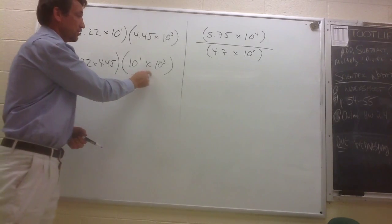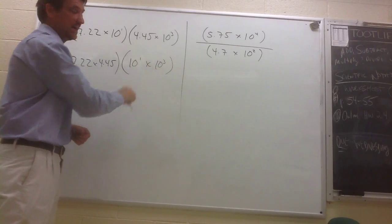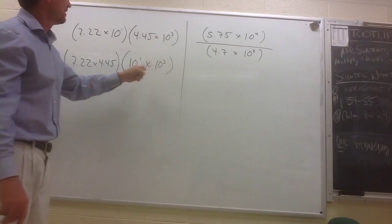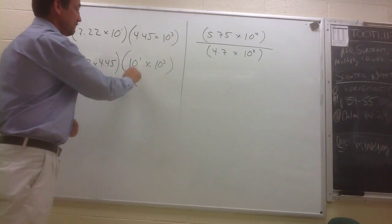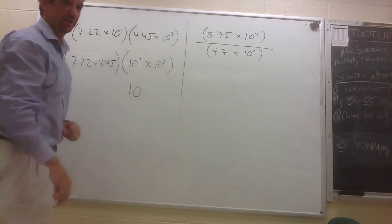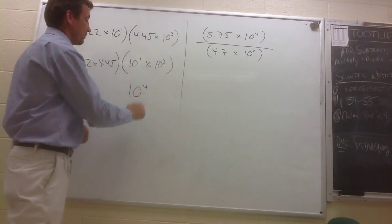Now remember on this, we learned last week when we're multiplying powers that have the same base. 10 to the 1st is a power, 10 to the 3rd is a power. They both have a base of 10. The rule tells us that we keep the base the same and we add the exponents. 10 to the 1st times 10 to the 3rd will give us 10 to the 4th.